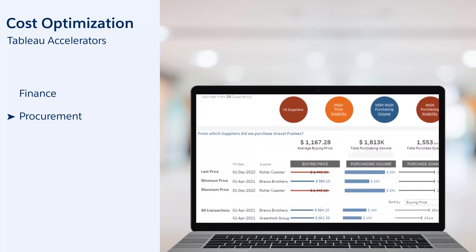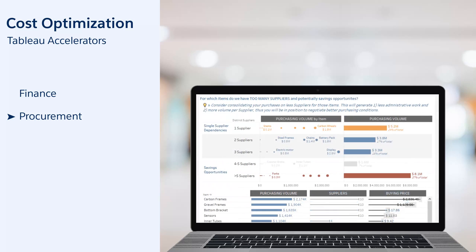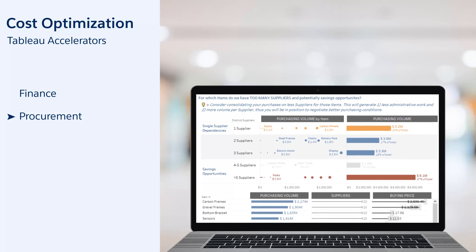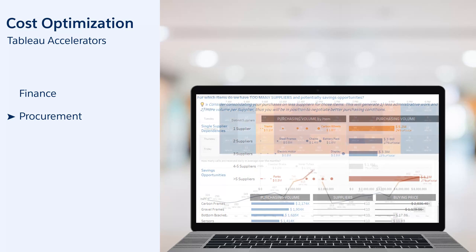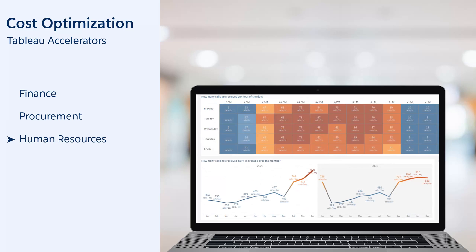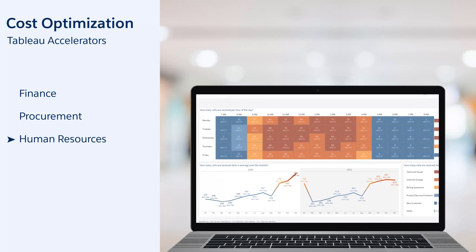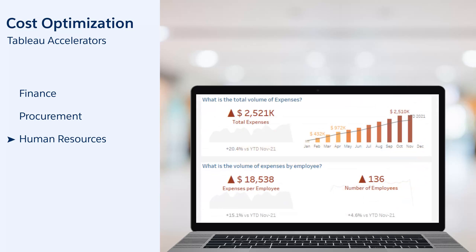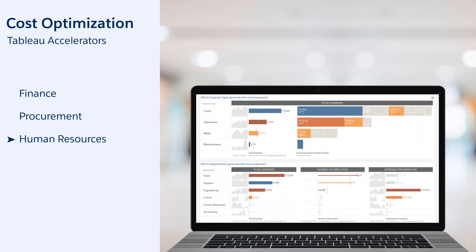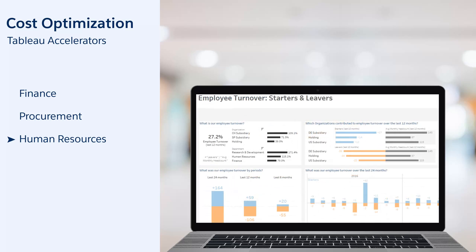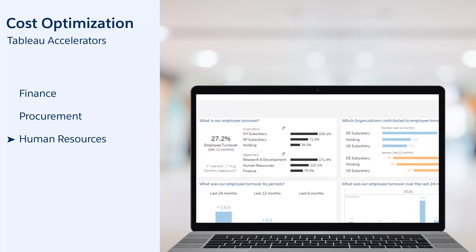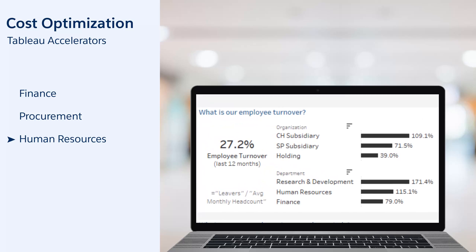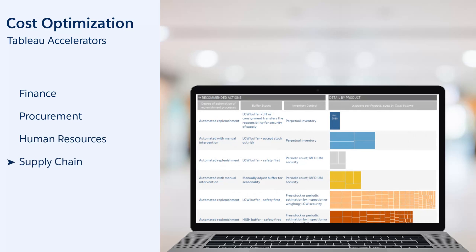Consolidate dispersed purchases to reduce administrative costs and negotiate better conditions. Human Resources: reduce operational costs through efficient resource allocation based on peak periods. Identify the top offending HR expenses and update your policies to get an immediate impact. Decrease induced costs of employee churn by focusing your efforts on high-risk departments.